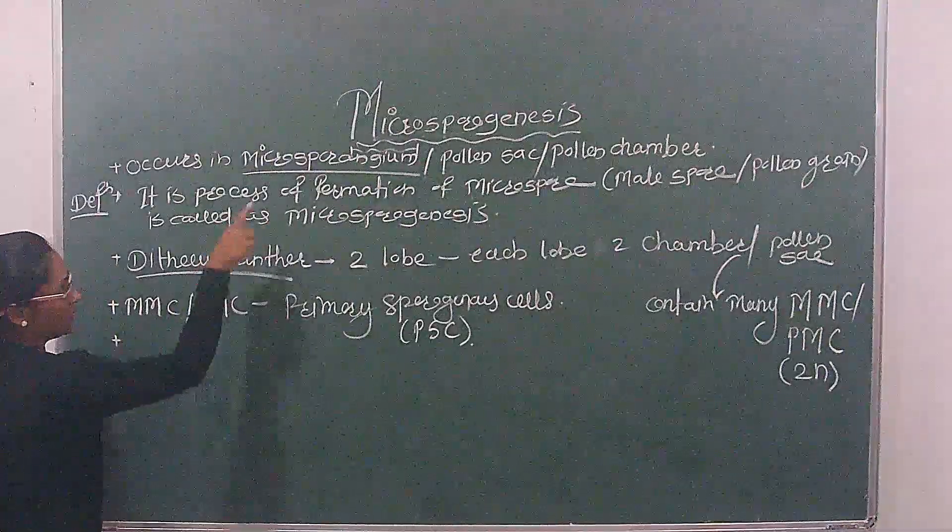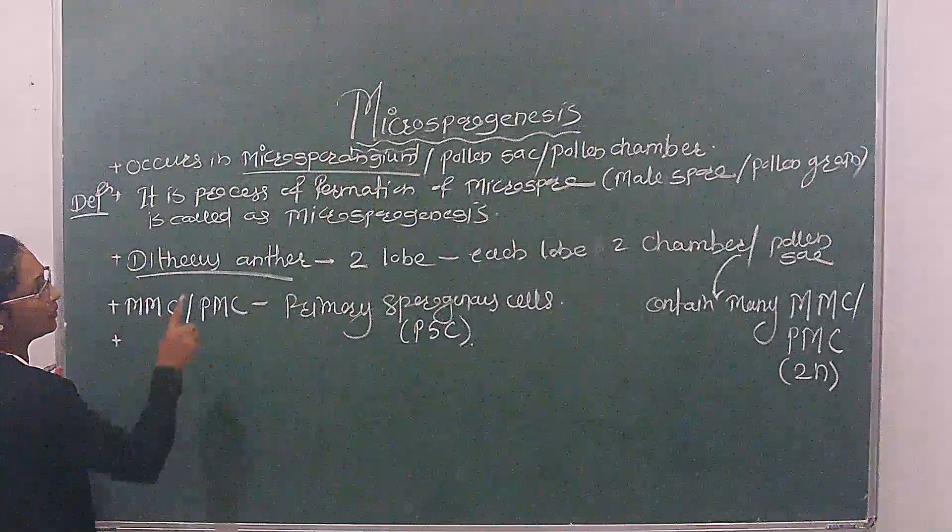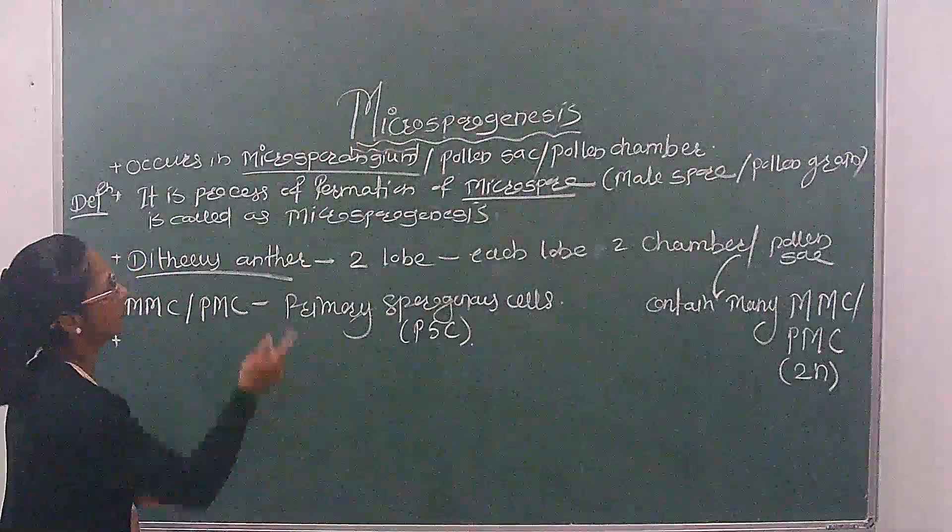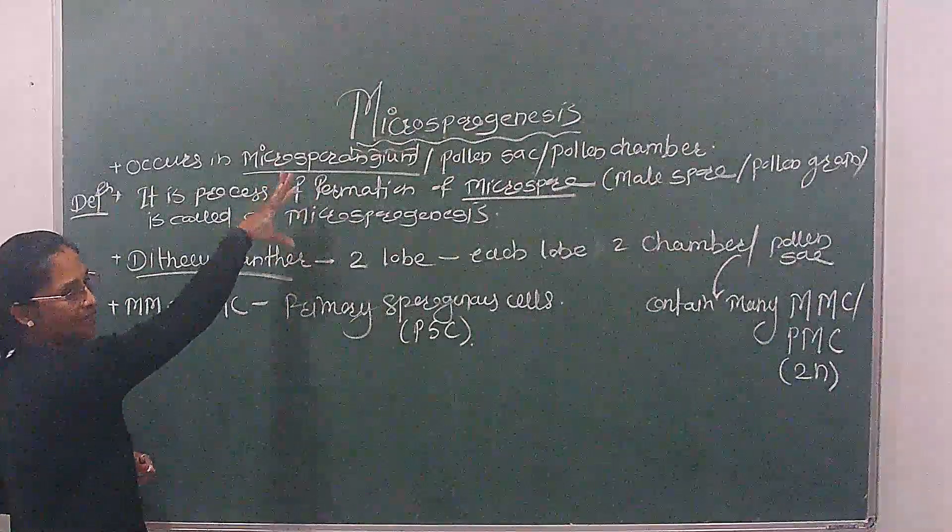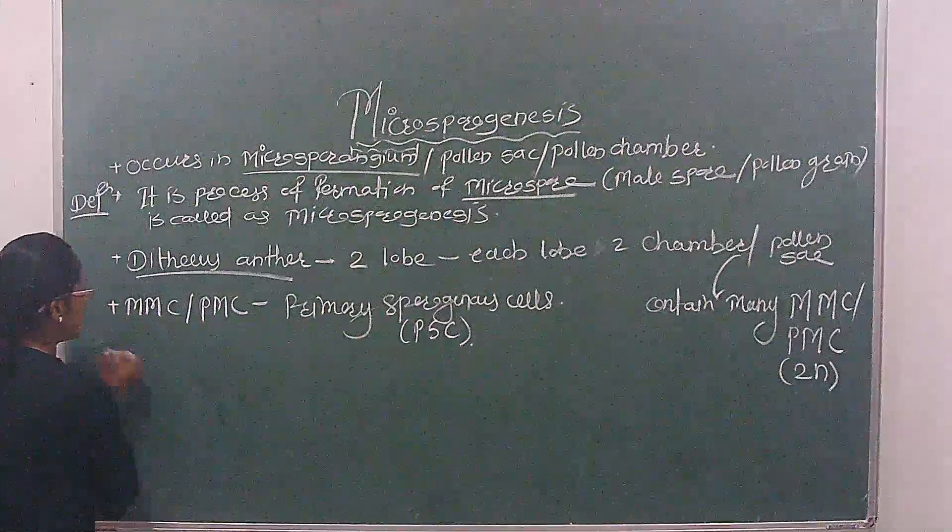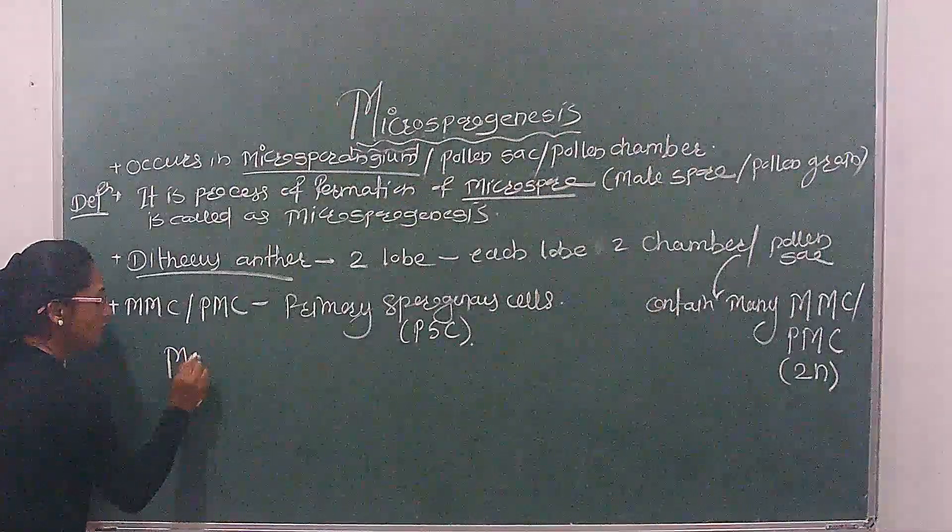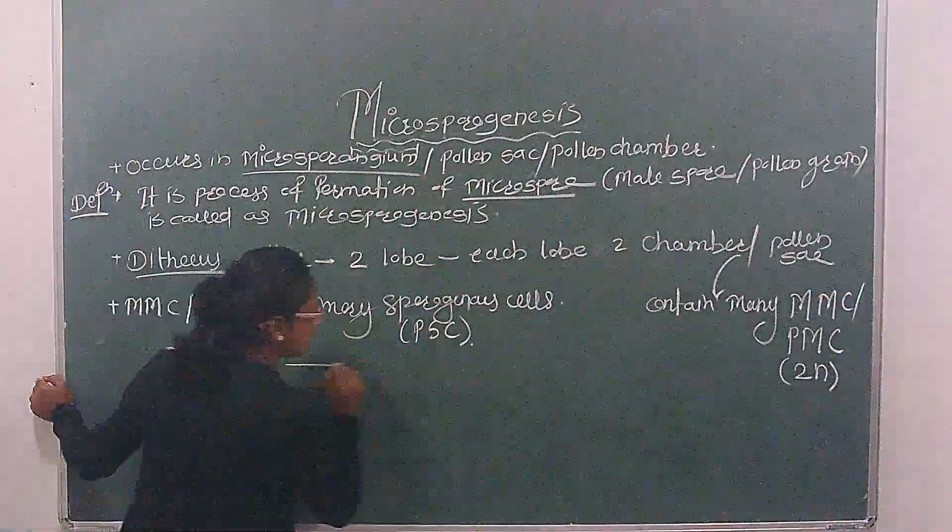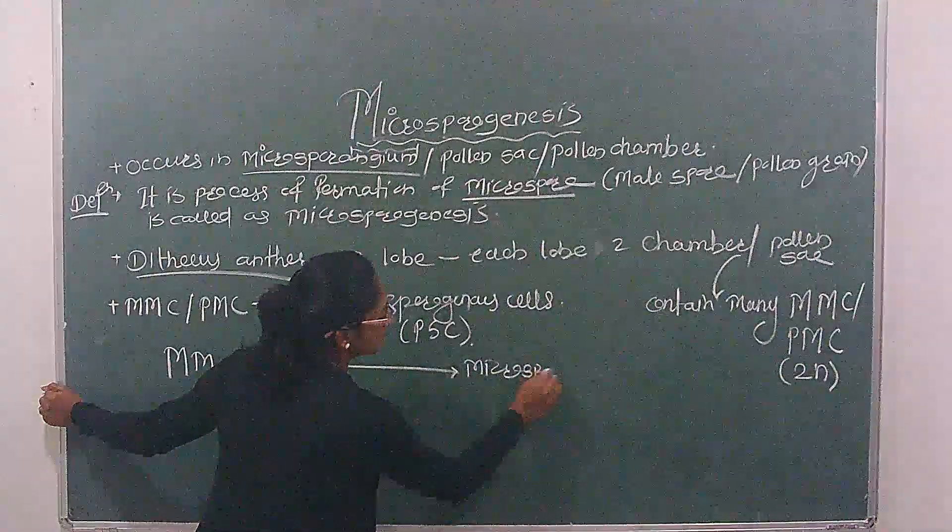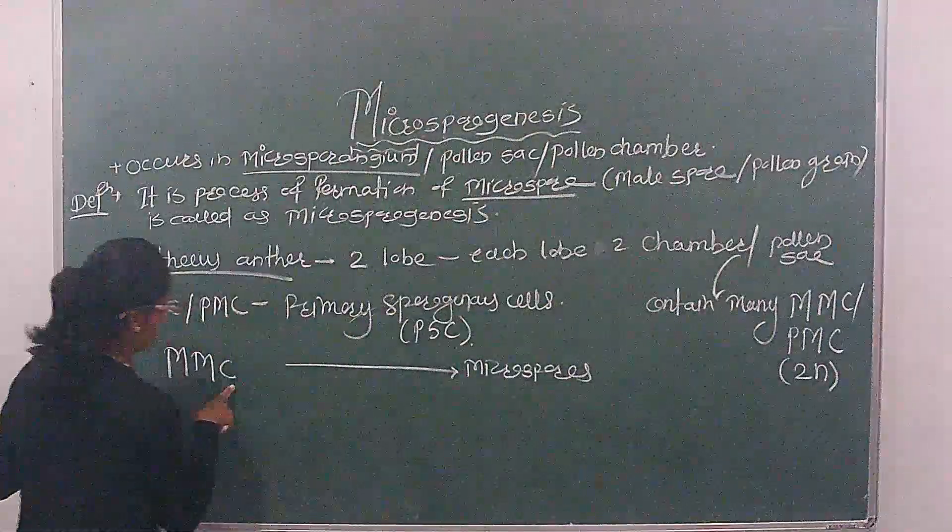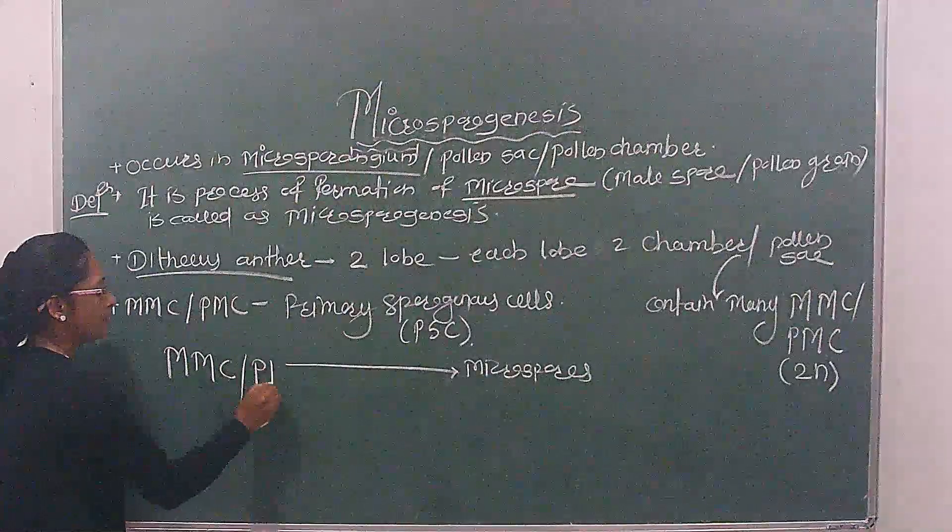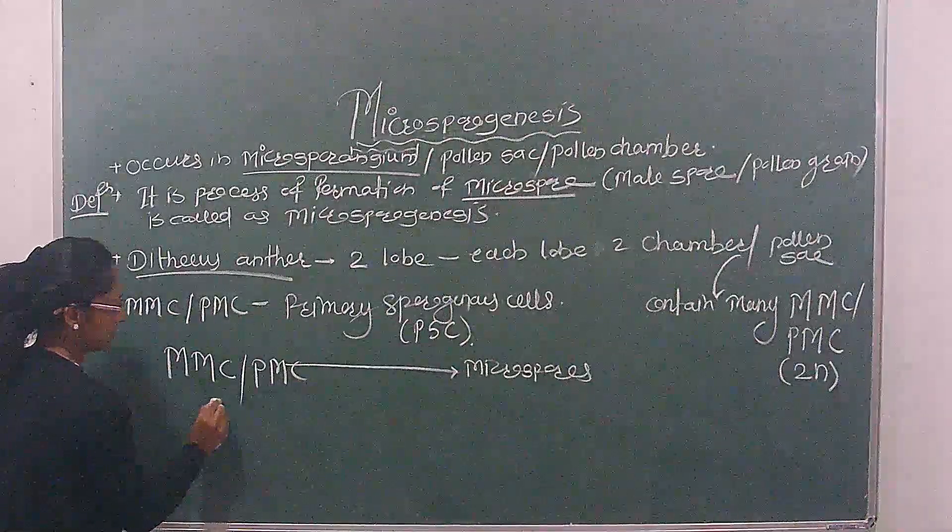Now actually microsporogenesis, we said it's the process of microspore formation. Where are they forming? In pollen sac or microsporangium. Actually the definition is formation of microspores from microspore mother cell or pollen mother cell.